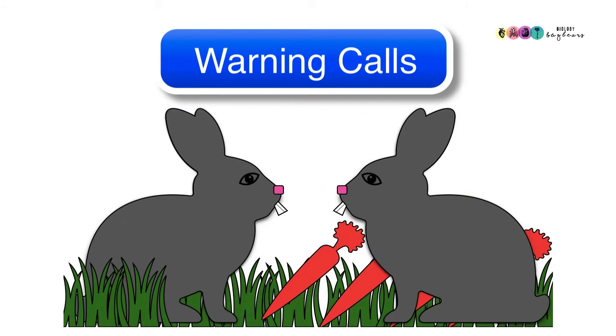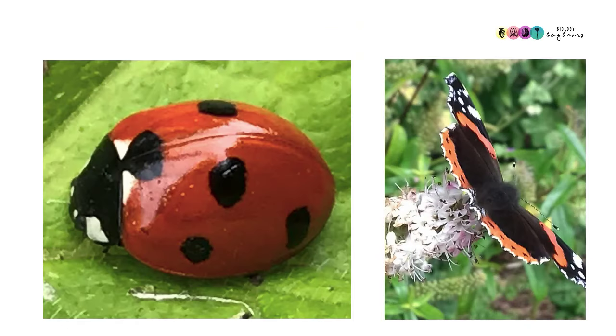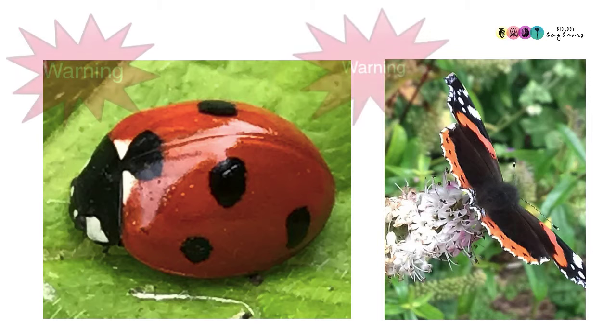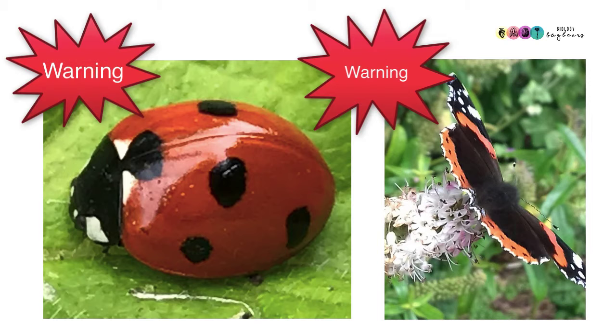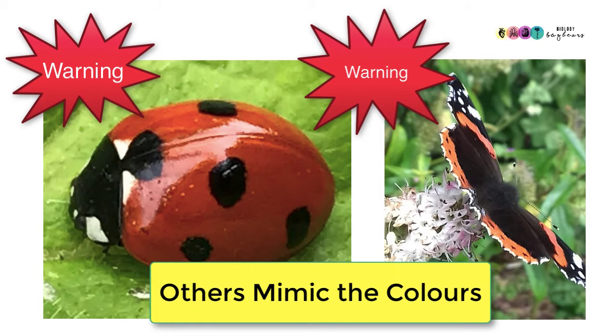Another physical adaptation of prey is they emit warning calls or they make a lot of noise. Some organisms have distinctive colouring. For example, bright red is usually a warning to predators, don't eat me, I taste bitter. And many other organisms, although they don't have that bitter taste, they've learned to mimic or they've evolved to mimic the colours of those other organisms.